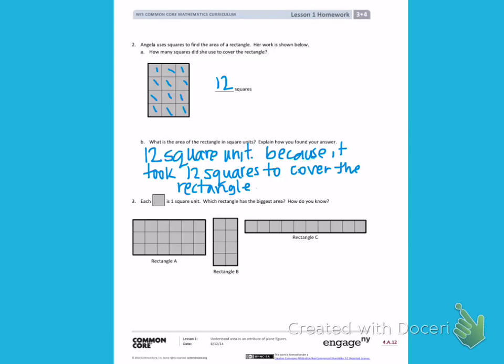Number 3. Each gray square is one square unit. Which rectangle has the biggest area? How do you know?